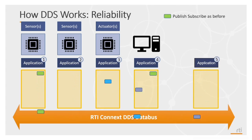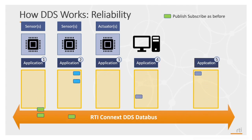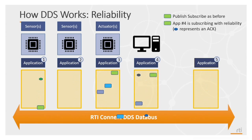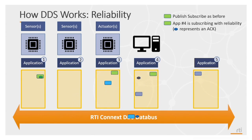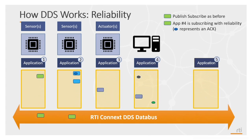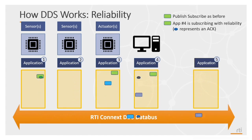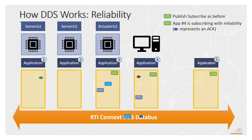What we were showing before was what we call best effort communication. The backend of DDS uses UDP communication, which is fast and simple. But if we need to communicate reliably, then additional communication layer logic is required. In this case, application 4 requires that its data comes in reliably, so it sends an acknowledgement back to all other applications that provided data. If an acknowledgement is not received by one of these applications, they'll resend the samples to make sure it gets to the application that needs it.